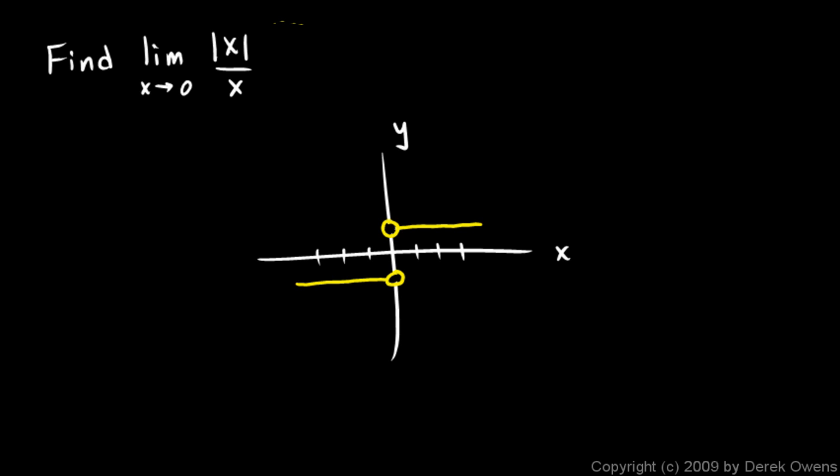So that's what our graph looks like. We're told to find the limit. Well, the limit in this case, the limit as x approaches 0 of f(x) does not exist. But we can very easily use limit notation to describe the behavior here.